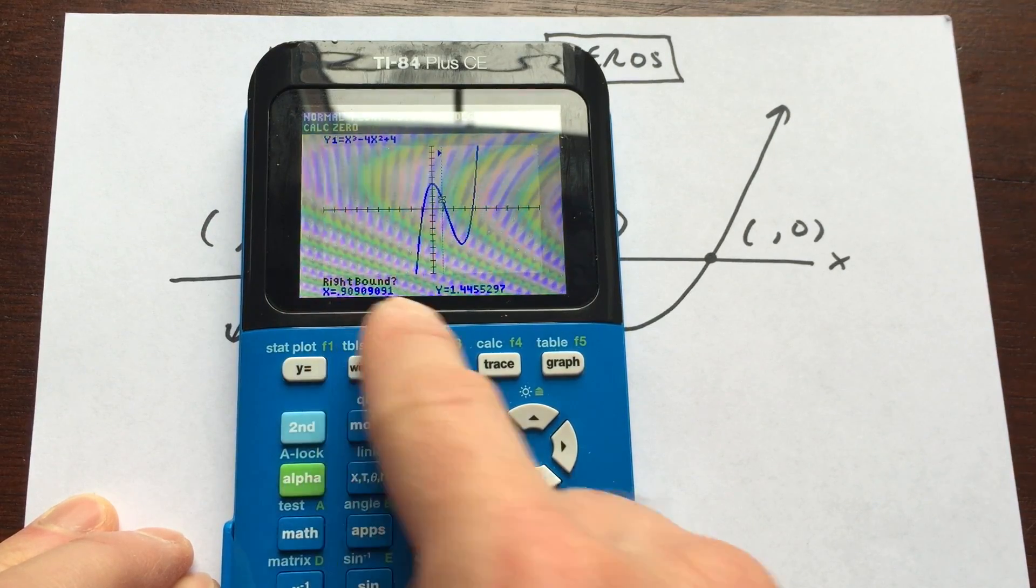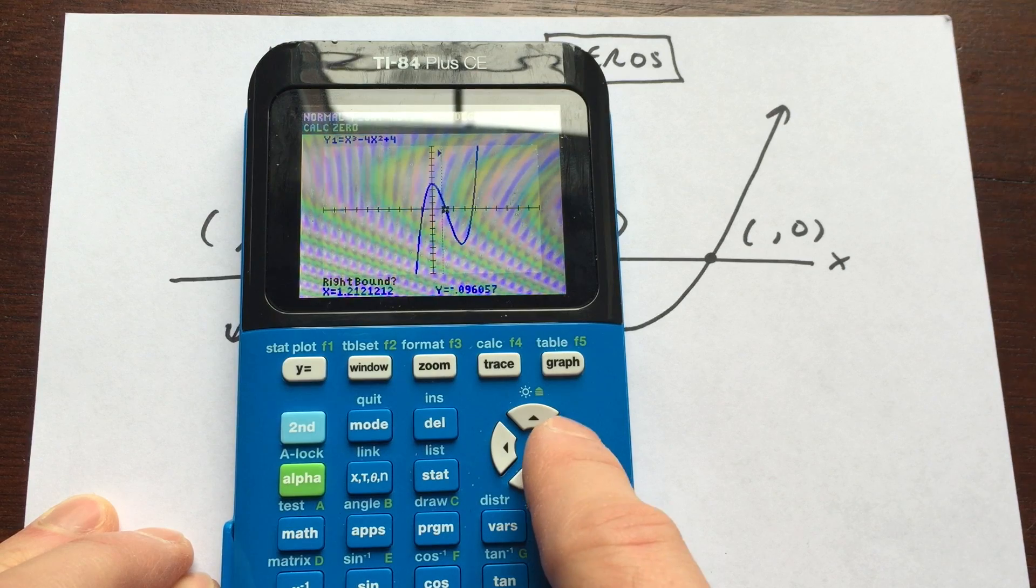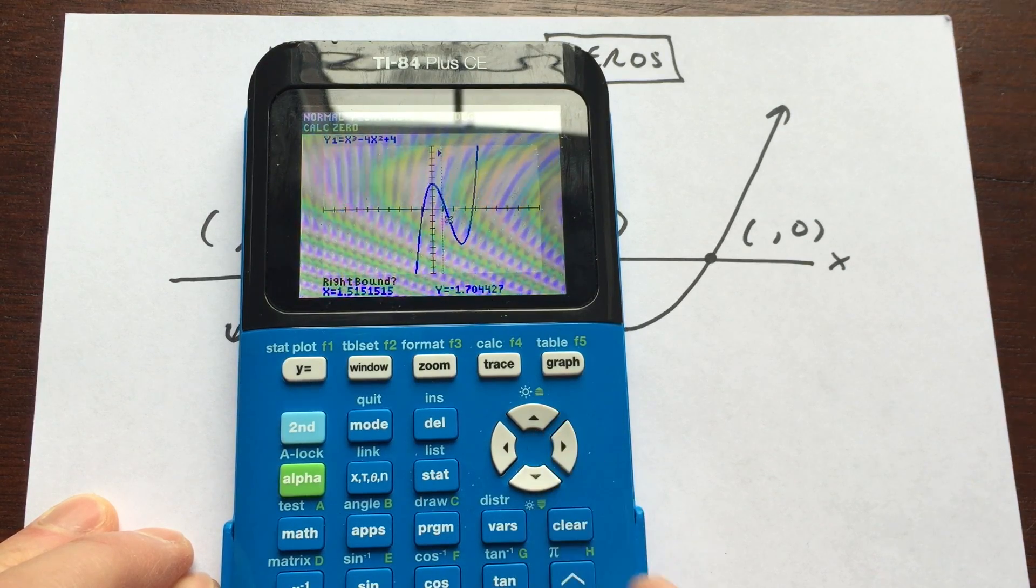And then over here, you can see it says right bound. So I'm going to arrow just a little bit to the right, but also below the x-axis. I'm going to press enter. And then you see how it says guess right here. You want to hit enter one more time, and it's going to find that point.